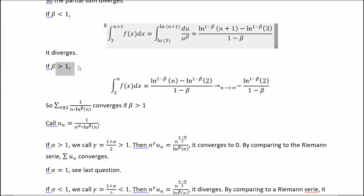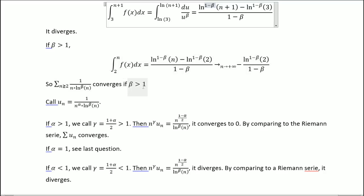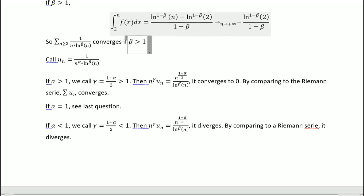If beta is superior to 1, we get this expression here, and it actually converges to this value. So that's pretty cool. It's the same method that we used, but we get different results due to the power. So this converges if beta is superior to 1.